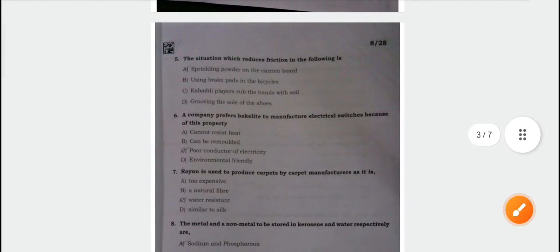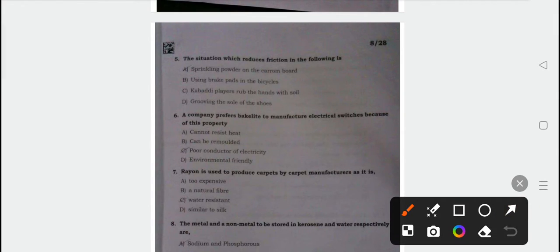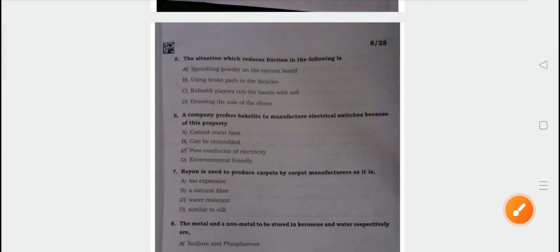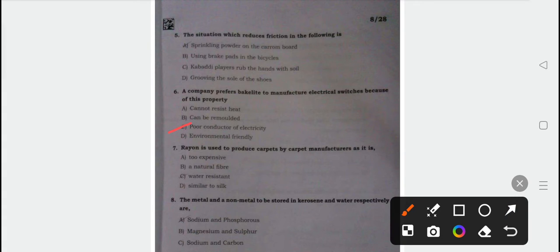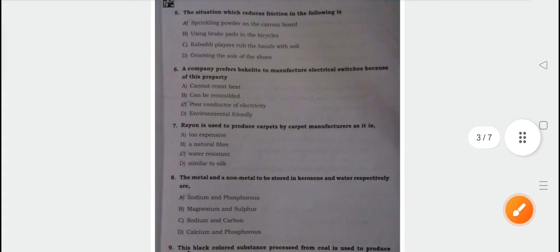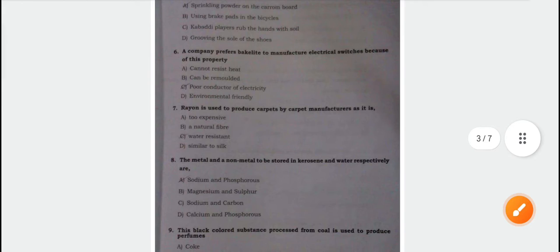Next question. The situation which reduces friction in the following is option A, sprinkle powder on the carom board is the correct answer. Next question: A company prefers bakelite to manufacture electrical switches because of this property. Option C is the correct answer for question number six, poor conductor of electricity.